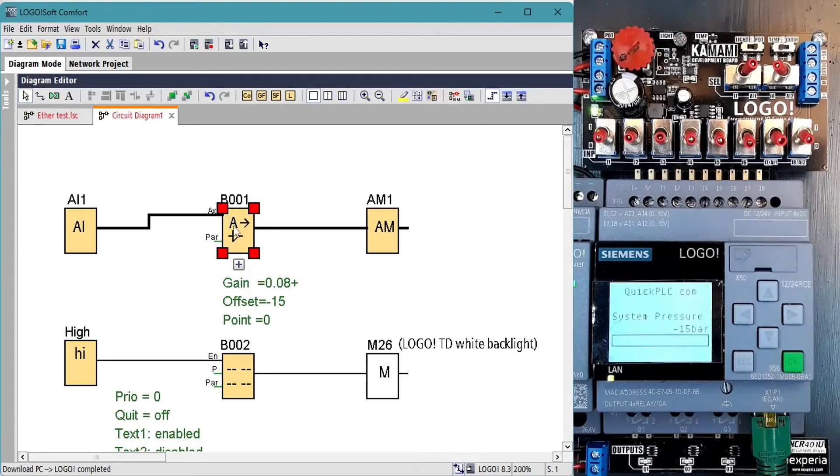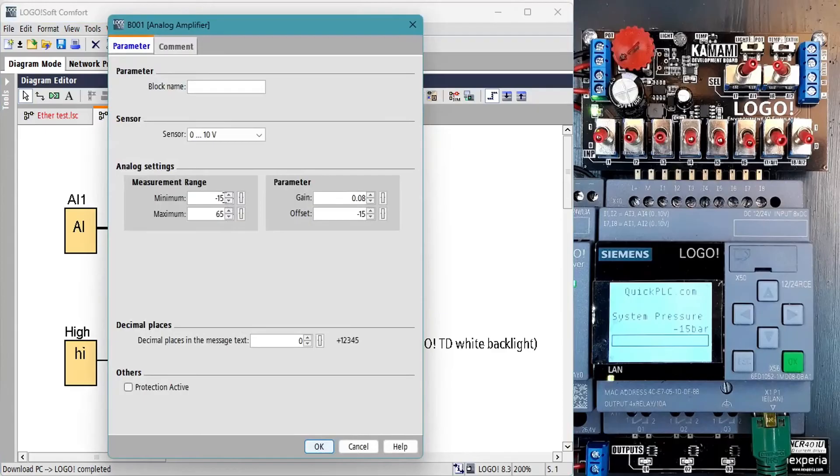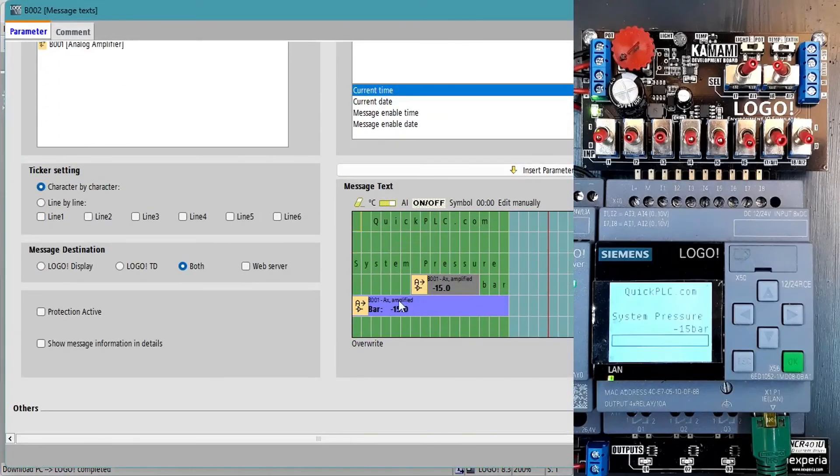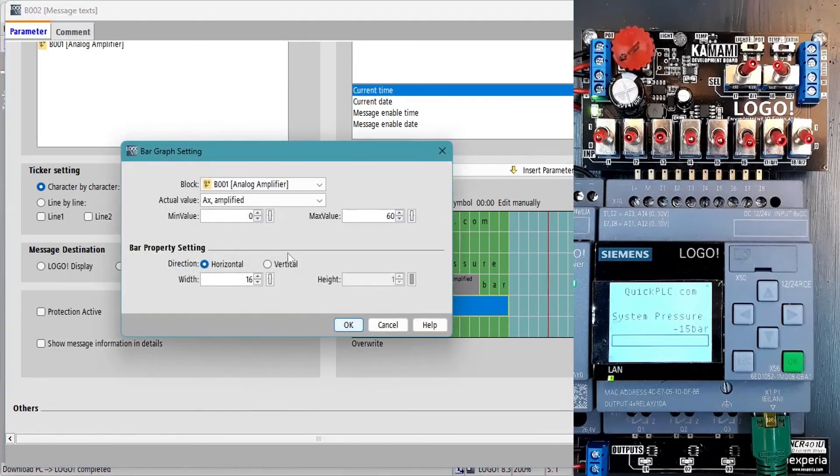While we're on the topic we'll modify to display the reading to one decimal place. We set the decimal places in the message text to one but all that does is add a dot so that 60 becomes 6.0. We need to scale the measurement range by a factor of 10. Watch the gain and offsets update as we do. The message text will automatically update the digital readout but we need to rescale the bar graph which doesn't know about decimals. It will see the 600 come through at full scale. That's done so transfer to the logo and test.